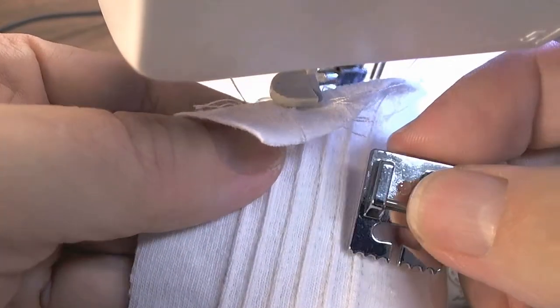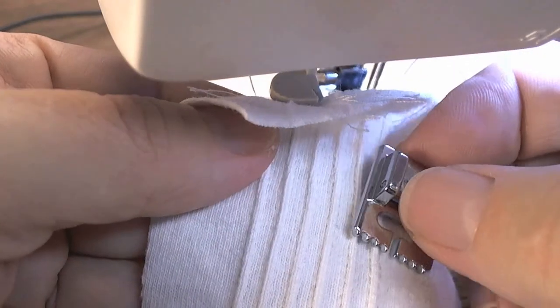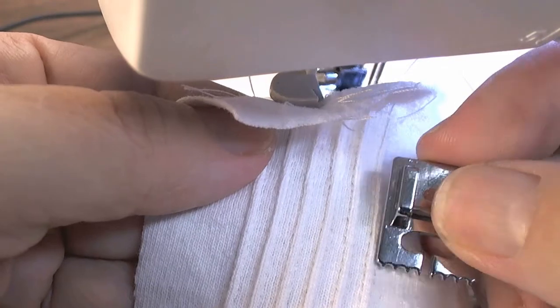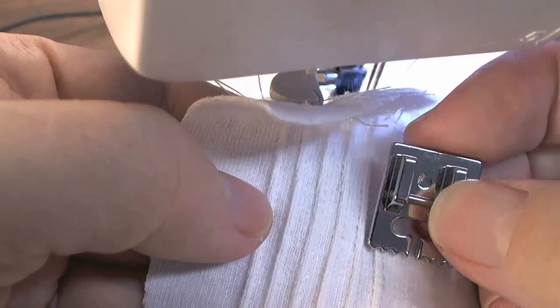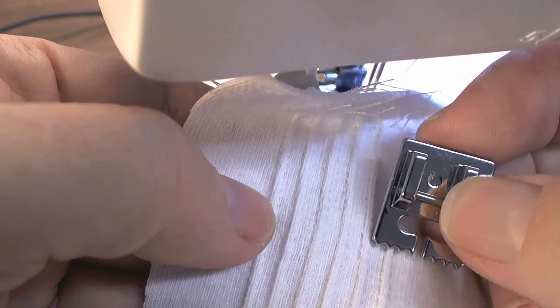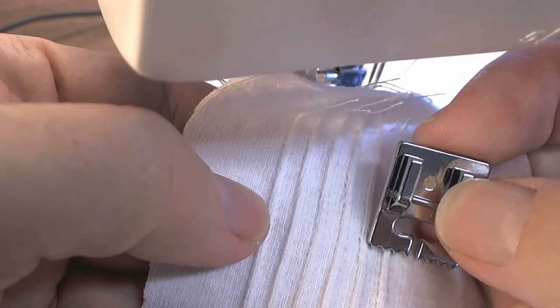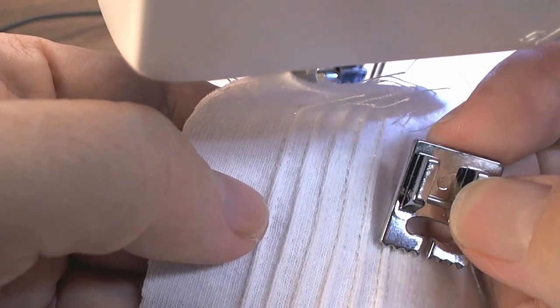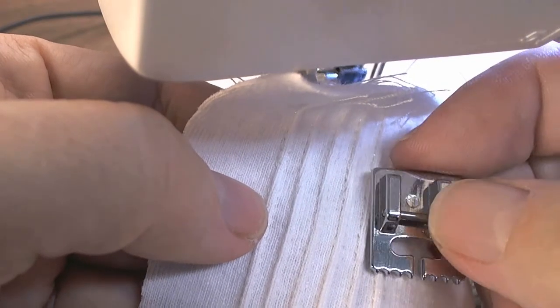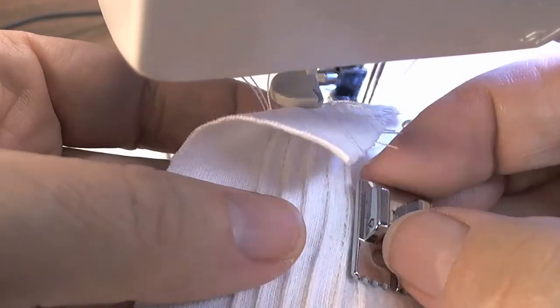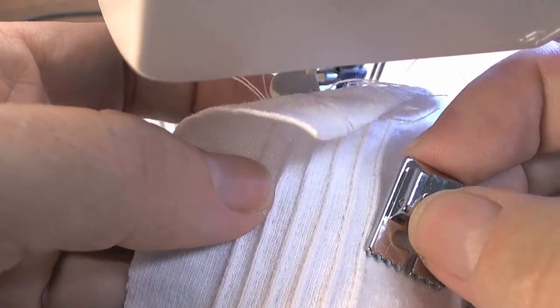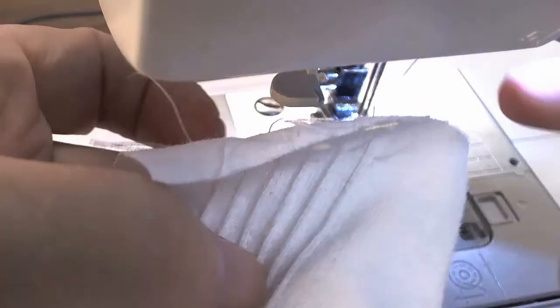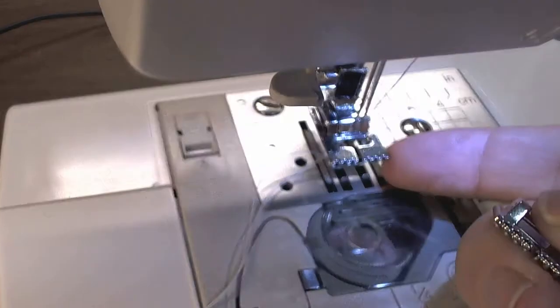So if you want to be closer, you do a close one. If you want to be farther, you use a farther one away. So this example is two millimeters apart with the two millimeter pin tuck foot. I've got one in my machine here and a presser foot here.